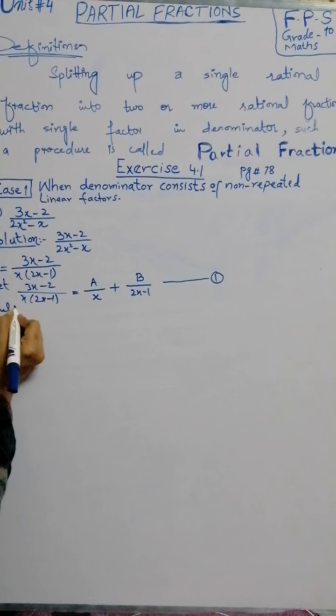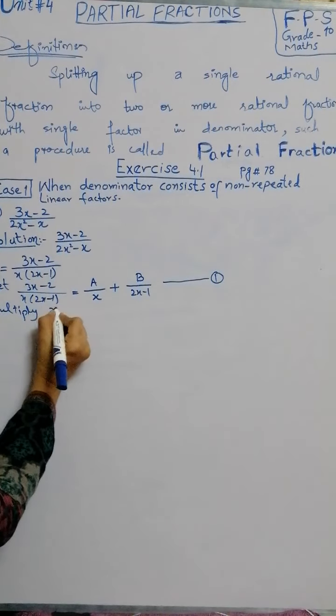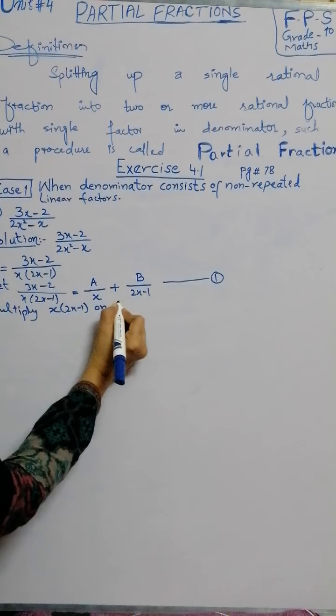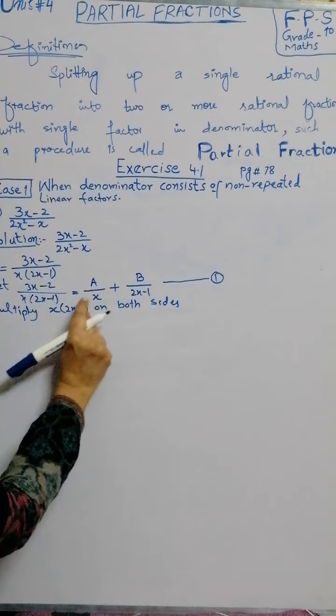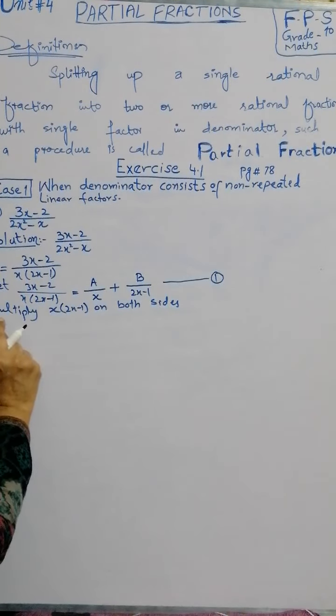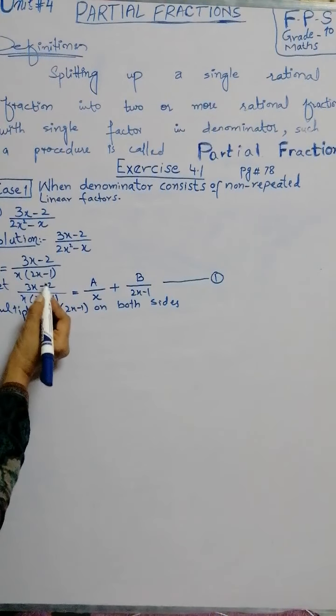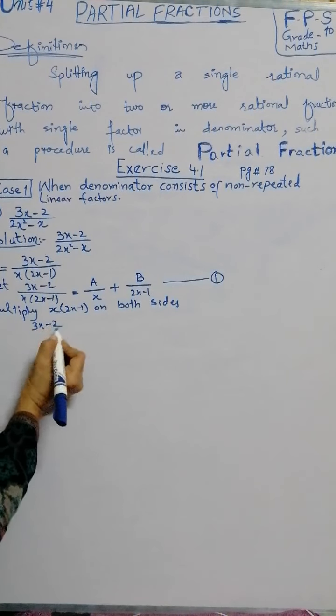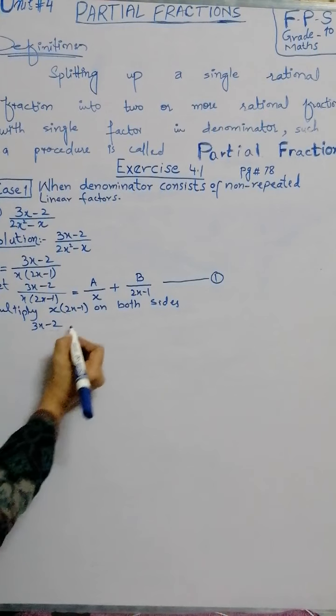Now, multiplying the denominator x times 2x minus 1 on both sides. First, we have the equation with partial fractions. Multiplying this denominator on both sides, left side we have 3x minus 2 as the numerator. When the denominator is multiplied, then x and 2x minus 1 are cancelled.